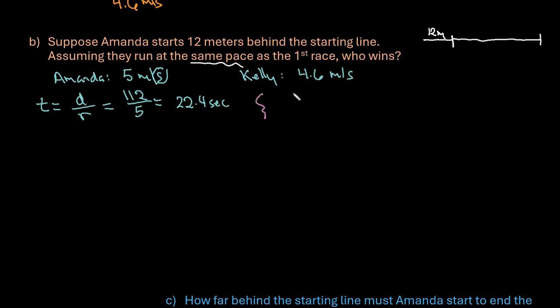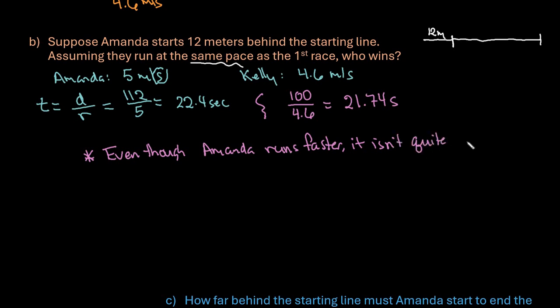We could find Kelly's again, but we already know that Kelly's running 100 meters, and we already did the 100 divided by 4.6 and saw that it was 21.74 seconds for her to finish the 100-meter dash. So in this case, even though Amanda is faster, it isn't quite enough to catch Kelly.